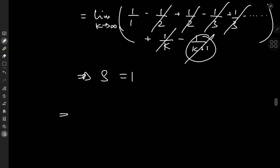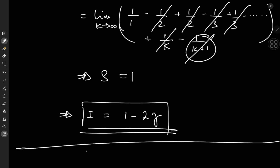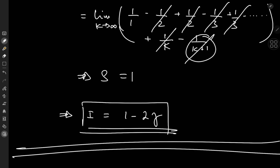So finally, our really cool double integral has a really cool result to match: it equals 1 minus 2γ, where γ is the Euler-Mascheroni constant. I hope you enjoyed the video. Be sure to like and subscribe, and check out the new merchandise in the shop. Thank you — see you next time.